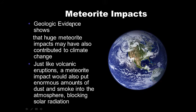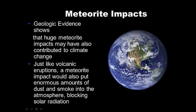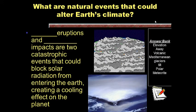Geologic evidence shows that huge meteorite impacts could have also contributed to climate change. Just like volcanic eruptions, a meteorite impact would put enormous amounts of dust and smoke into the atmosphere, blocking solar radiation. A meteorite impact could cause widespread fires and devastation, putting smoke into our atmosphere and effectively blocking out the sun, cooling the planet.